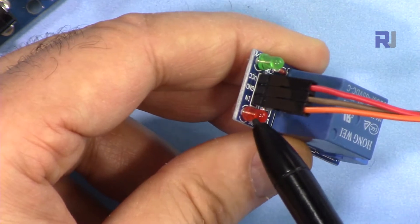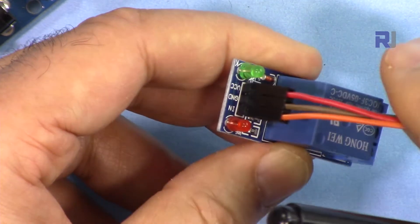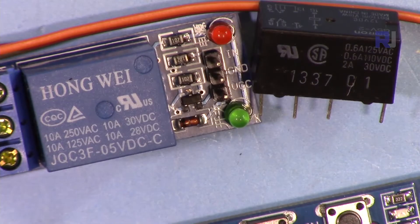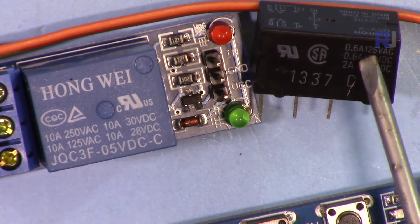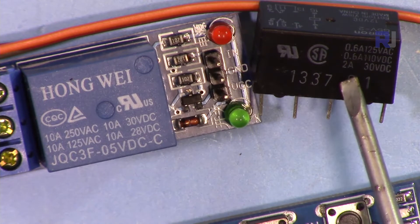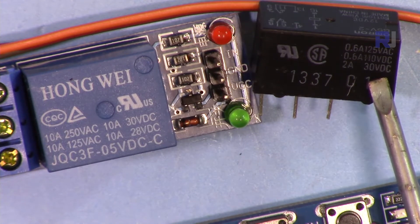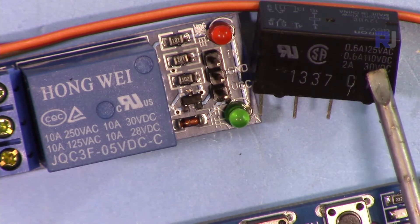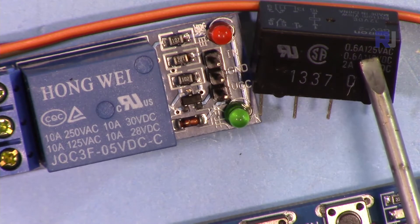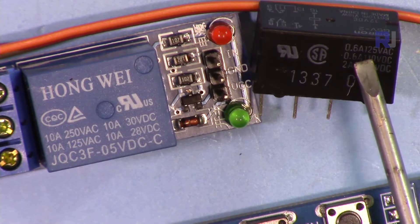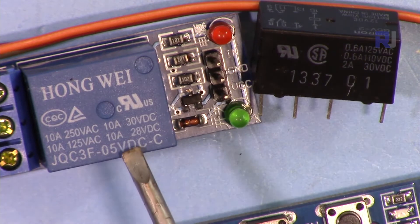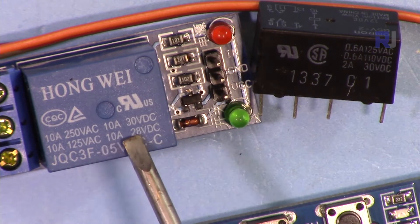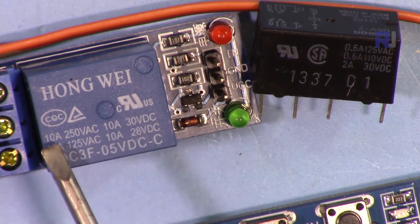When you're using a relay, pay attention to the current rating. For example, this is a very tiny relay with a current rating of 2 amperes for 30 volts, 0.5 amperes for 100 volts, and 0.6 amperes for 125 volts. This is the amount of current that it can handle.